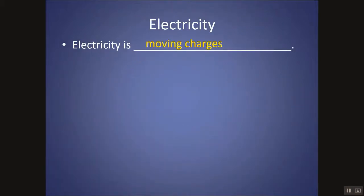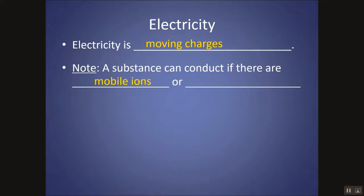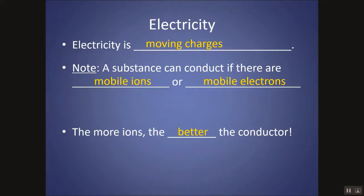Remember, electricity is moving charges. So if you have a substance that has either mobile ions in it or mobile electrons, it could carry these moving charges through the substance and conduct electricity. The more ions you have or the more electrons you have, the better the conductor.